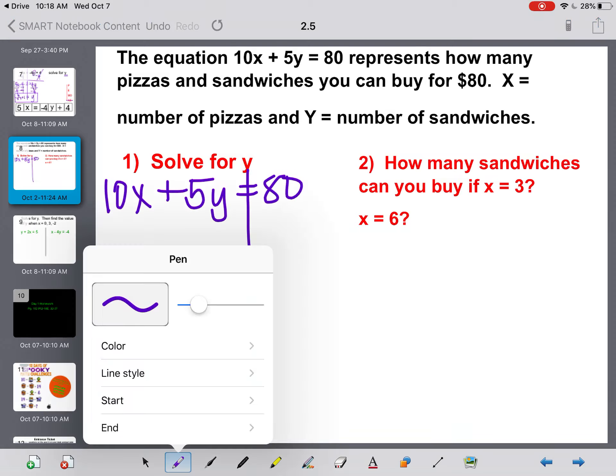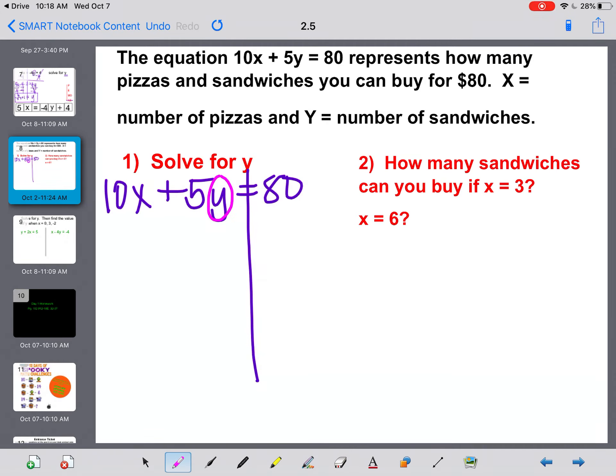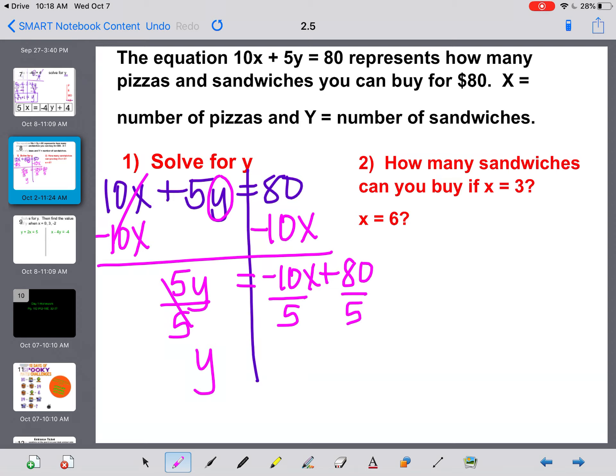So if we have 10x plus 5y equals 80, and we're trying to solve for y, I'm going to work backwards. Take away anything that's being added or subtracted from that term, which means I'm going to subtract 10x from both sides. Leaving me with 5y equals negative 10x plus 80, and then divide by 5 on every term, which gives me y by itself like we wanted, equals negative 2x plus 16. That's part 1. I got y by itself. I solved it for y.